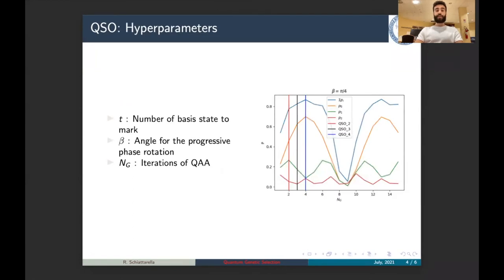QSO can be tuned by means of three hyperparameters: t, the number of basis states to mark; beta, that is the angle for the progressive phase rotation; and ng, that is the number of iterations of quantum amplitude amplification. As you can see from the right of this chart, a different combination of these three hyperparameters corresponds to a different distributional probability that is encoded in the quantum states we are considering for our QSO.